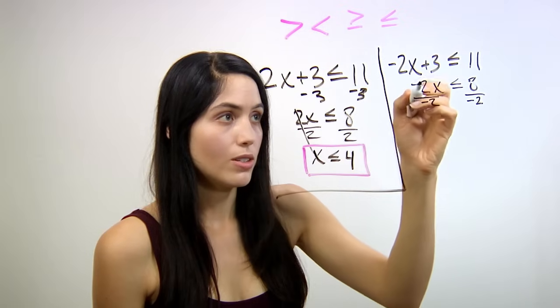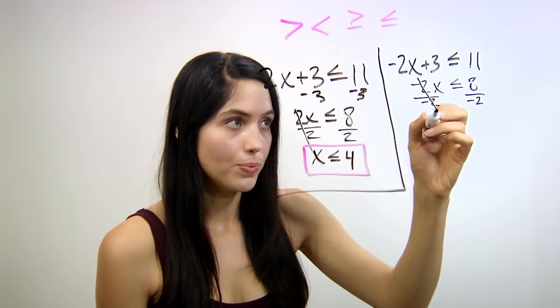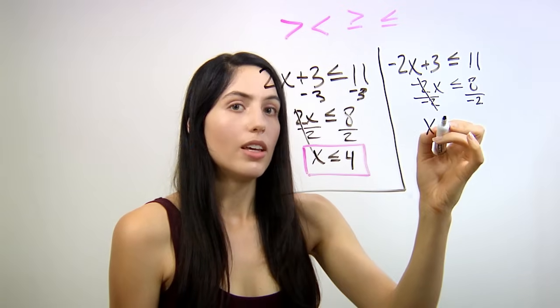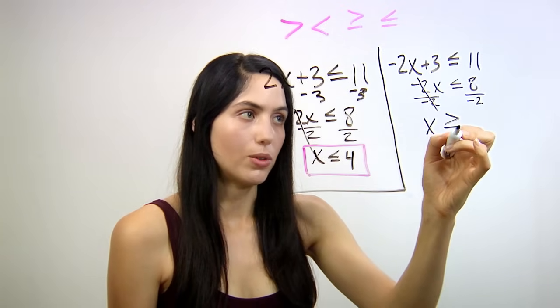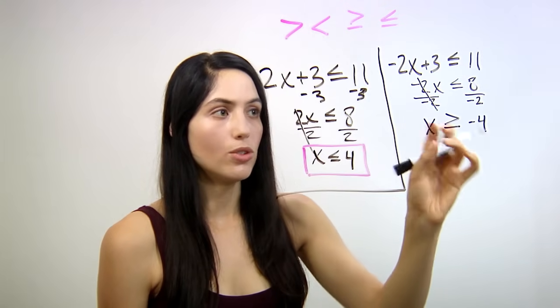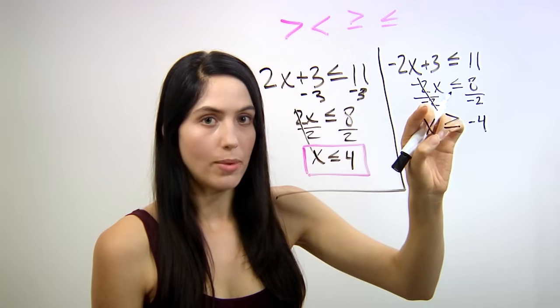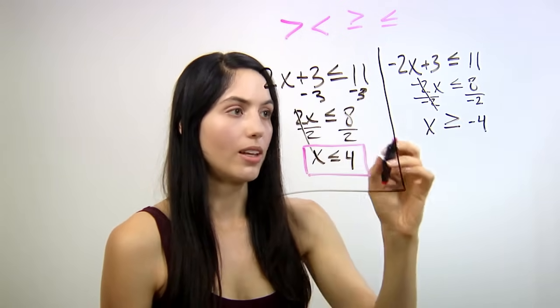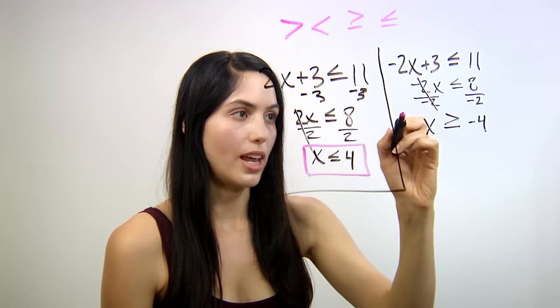So in this equation, we divide out negative 2. That goes away. We get x is greater than or equal to—flip the sign—negative 4. And the reason we flip the sign is just because we divided by a negative number. So your final answer in this one is x is greater than or equal to negative 4.